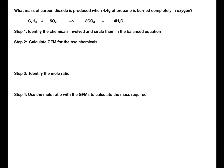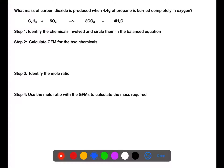I have another video on my channel which uses the mole method. Balanced equation calculations always involve calculating the mass of either a reactant or product from the given mass of another reactant or product in the equation. The first step is always to identify the two chemicals you are using in the calculation. We do this by reading the question carefully and then circling the chemicals in the balanced equation. You can then score out any other chemicals.